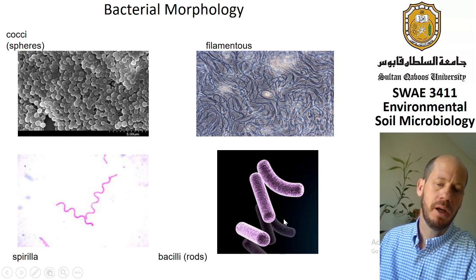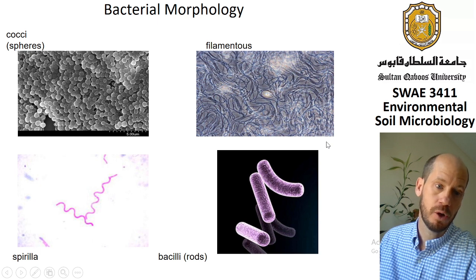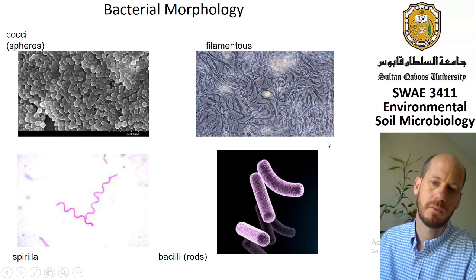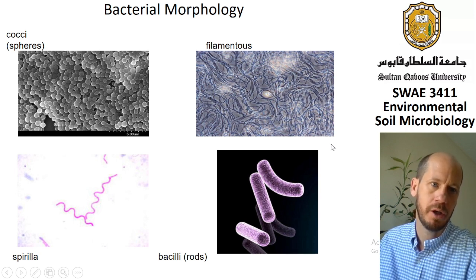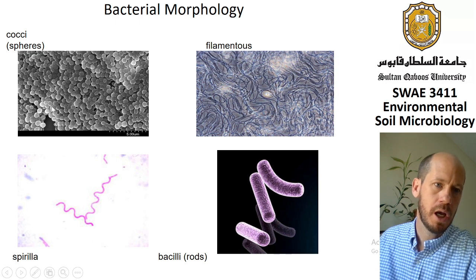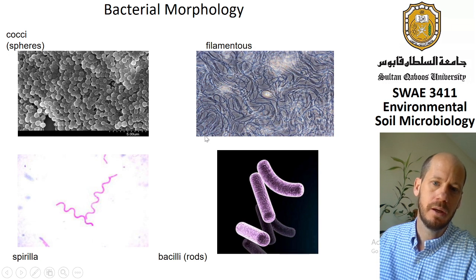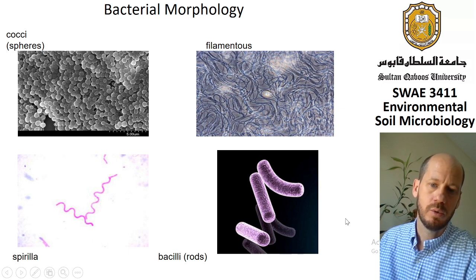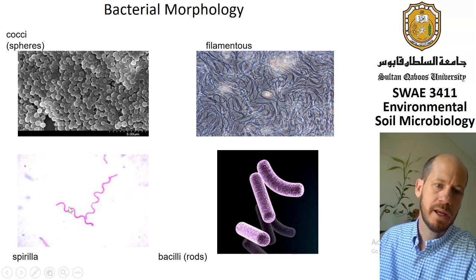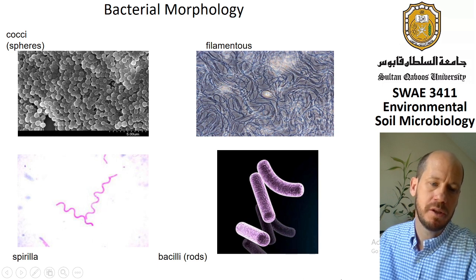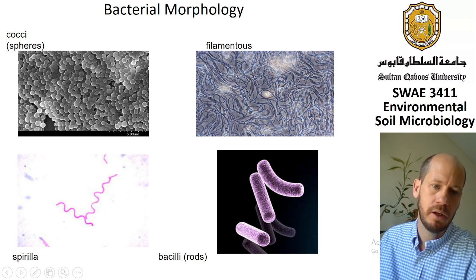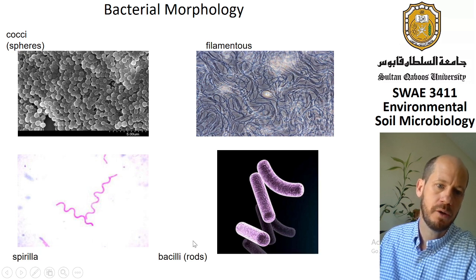The morphology of bacteria doesn't tell us much about taxonomy in soil, but some things are obvious. We have cocci, which have spherical forms; filamentals, like the actinomycete bacteria in soil; bacilli rods, which are very typical observations from soil microbes; and spirilla, which have spiral forms.